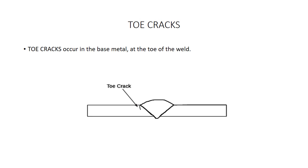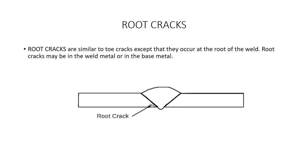Here's an example of a toe crack. Toe cracks occur in the base metal at the toe of the weld. Root cracks are similar to toe cracks except that they occur at the root of the weld. Root cracks may be in the weld metal or in the base metal — they get their name because they start at the root of the weld.